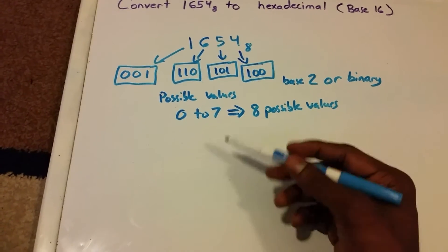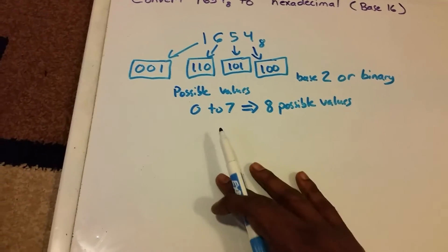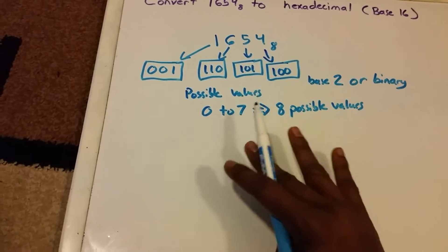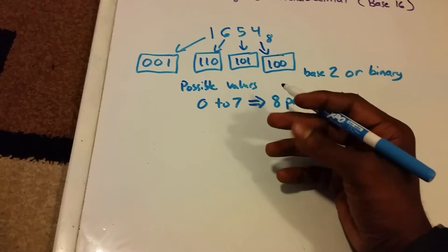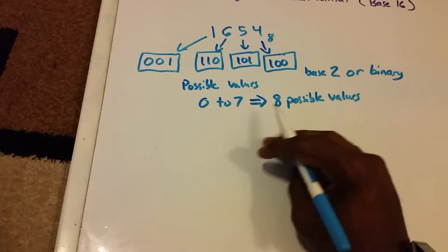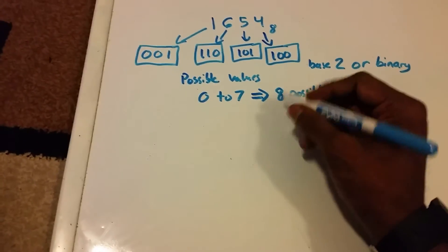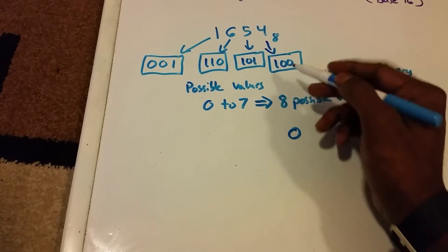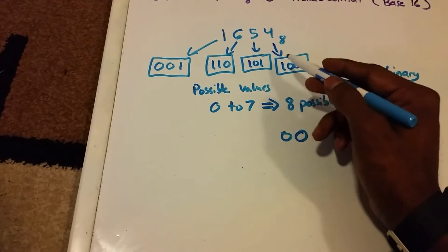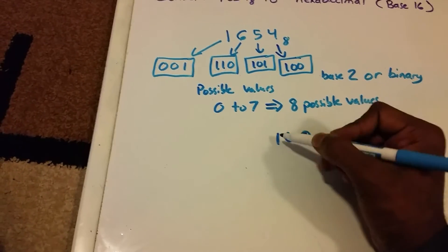Now all we need to do is group these by 4 instead of 3. Why 4? Because the number of possible values with 4 bits is from 0 to 15. So let's group these in 4. First, we take that 0 here, that 0 here, the 1 here, and then this other one here. That's our first grouping of 4 bits.